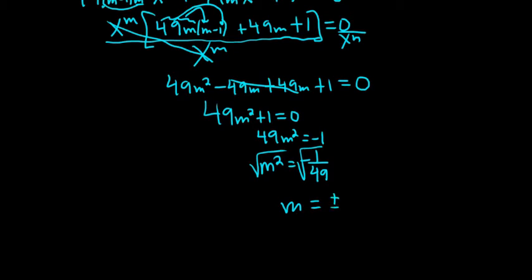So plus or minus i, and then the square root of 1 is 1. The square root of 49 is 7. So we have something like 0 plus or minus 1 over 7i.